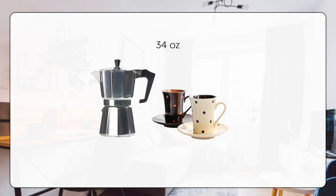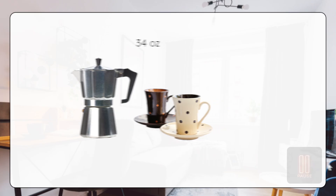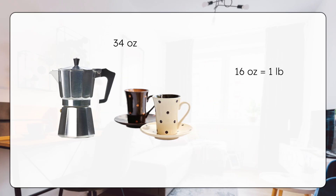Now let's check out the heaviest souvenir — this coffee set, which weighs 34 ounces. Pause here to figure out if this is less than 2 pounds. 16 ounces equals 1 pound, so 32 ounces equals 2 pounds. That means 34 ounces is more than 2 pounds, and that's without the box. Looks like this package will cost more to mail.